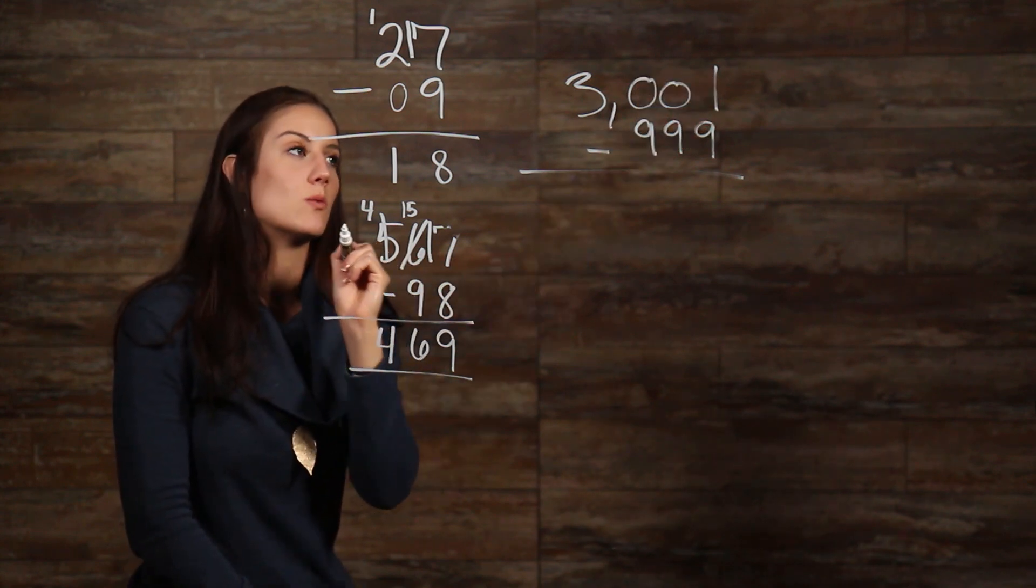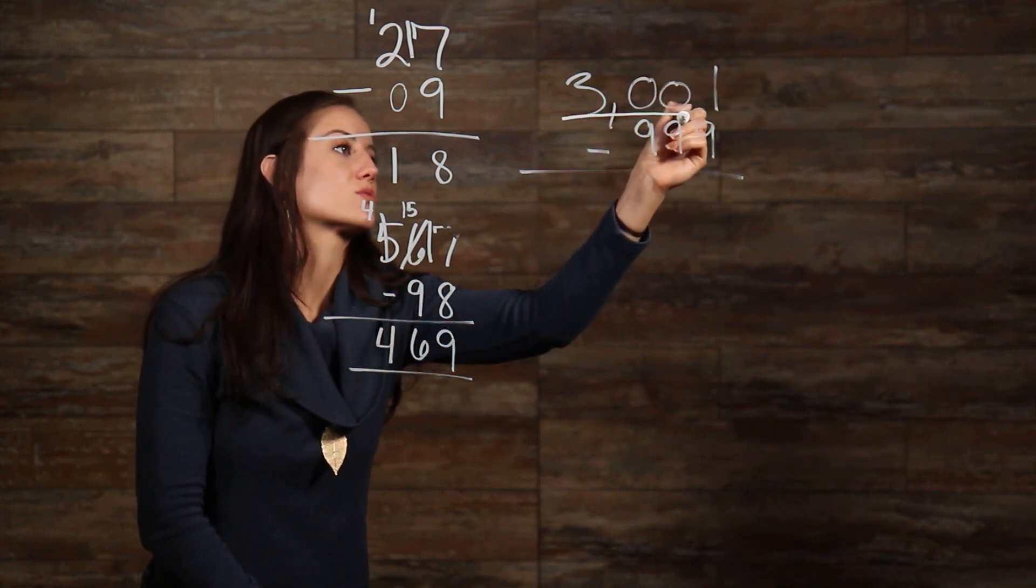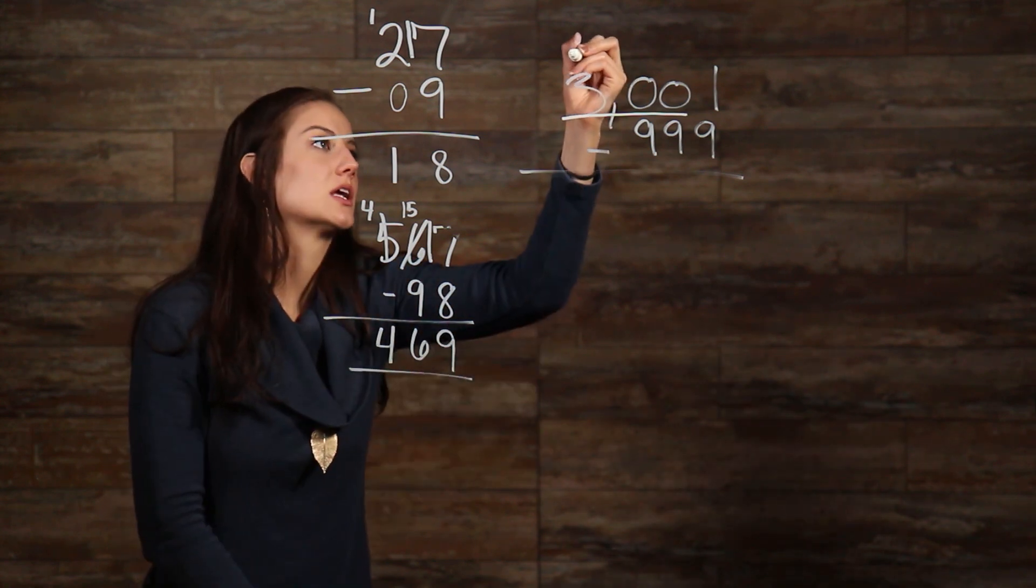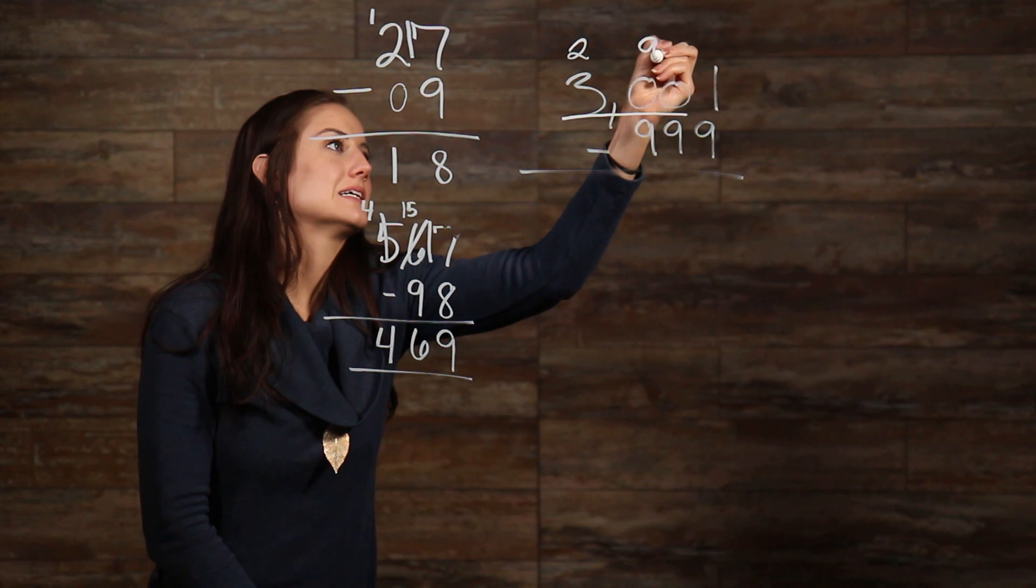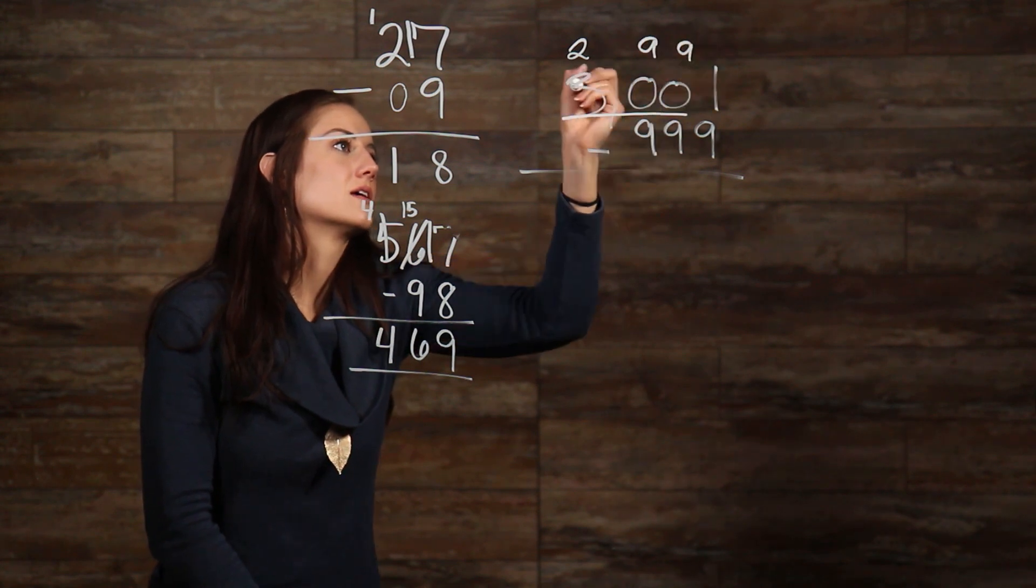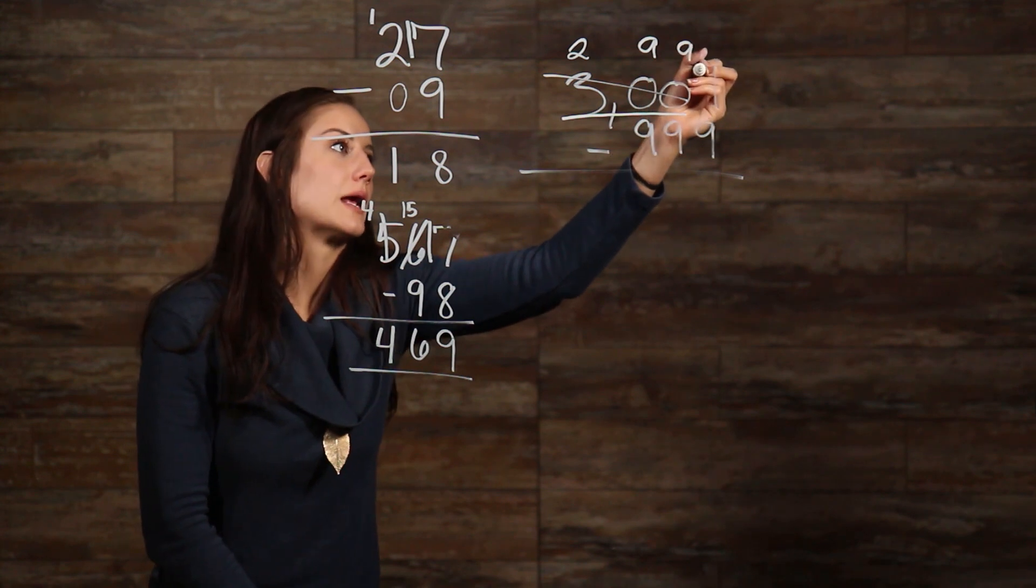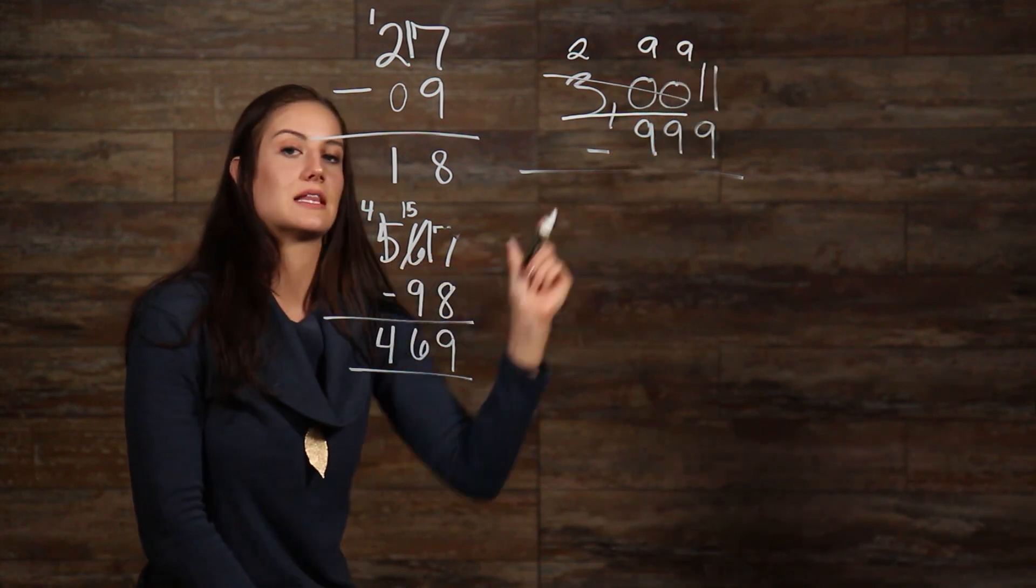So, what ends up happening is we're taking 1 away from this 3 in the thousands place right here. So, we can cross this out, and we'll take the 1 that we borrowed and bring it in front of our 1 here to give us 11.